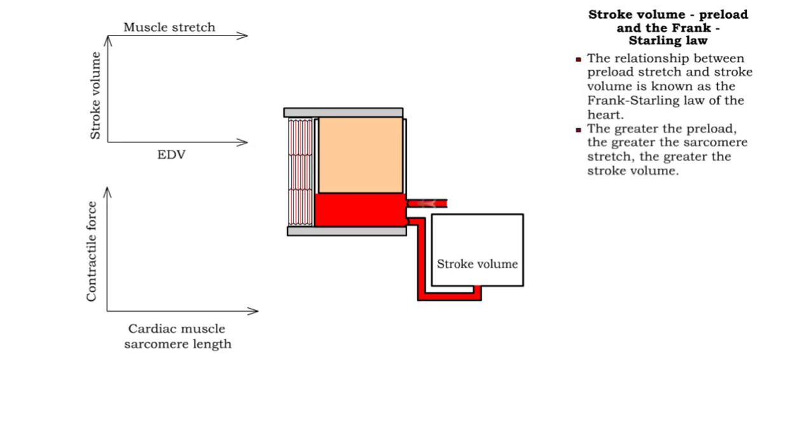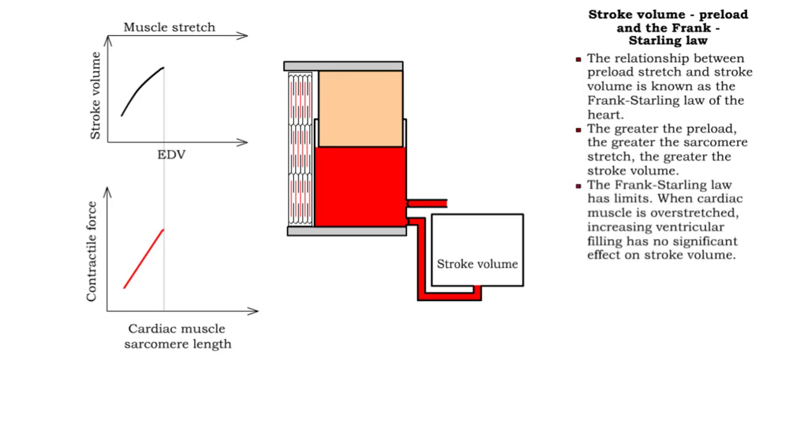The greater the preload, the greater the sarcomere stretch, the greater the stroke volume. The Frank-Starling law has limits. When cardiac muscle is overstretched, increasing ventricular filling has no significant effect on stroke volume.